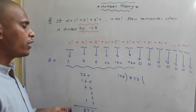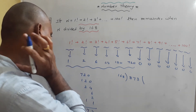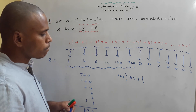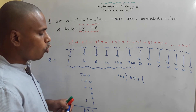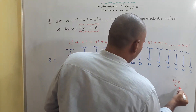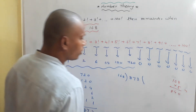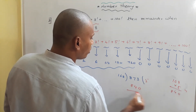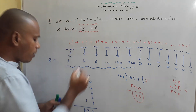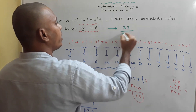Dividing 873 by 168: 168 × 5 = 840, and 873 − 840 = 33. So the remainder when the total summation is divided by 168 is 33. That is our answer.